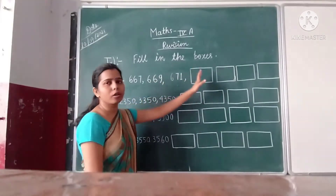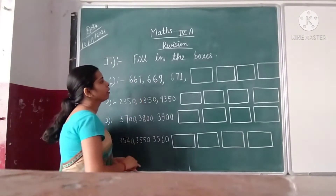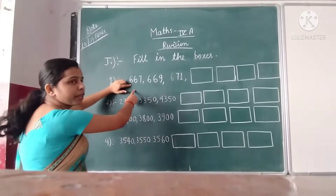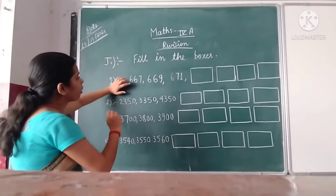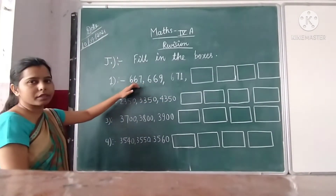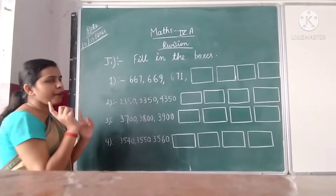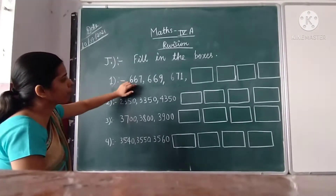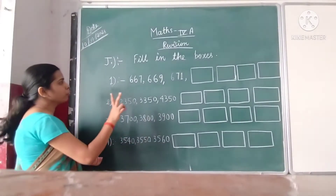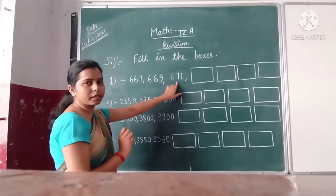Our next topic is: fill in the boxes. In the first series, 667 and 669 and 671 — this represents the increasing order. When we add 2 to our first number we get the next number. When we add 2 in 667, we get 669. When we add 2 in 669, we get 671.